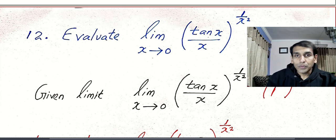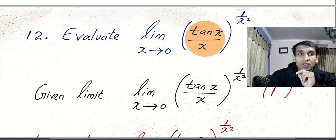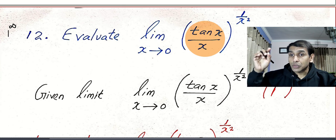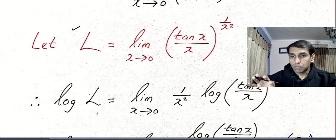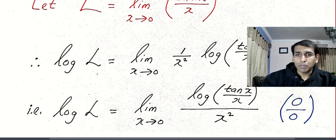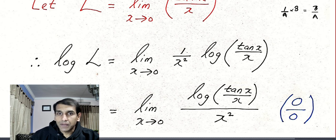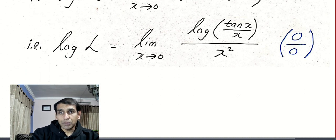How many of you tried the question in the last video? I told you that tan x divided by x equals 1 if x is very small, so we get 1 to the power infinity. We learned many problems related to 1 power infinity, infinity power 0, and 0 power 0. The method is: call the given limit capital L, take logarithm on both sides, and simplify. Note that 1/a multiplied by b can be written as b divided by a.